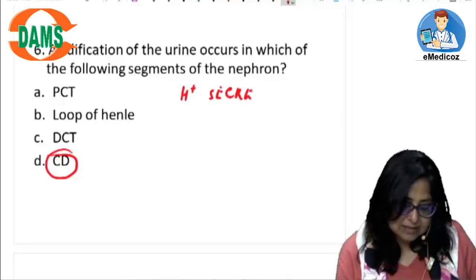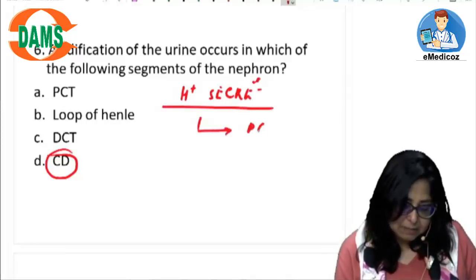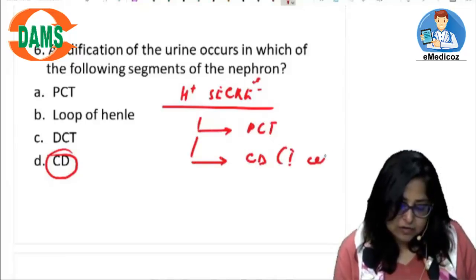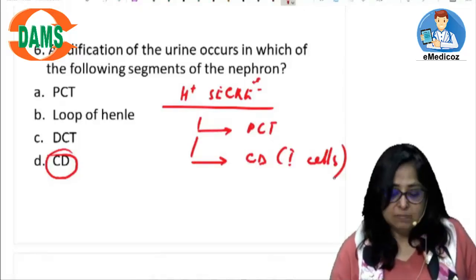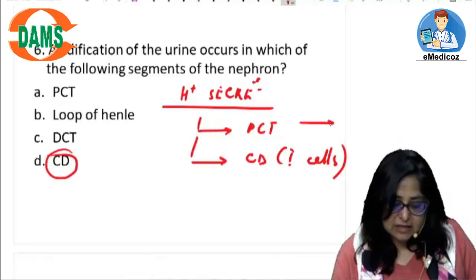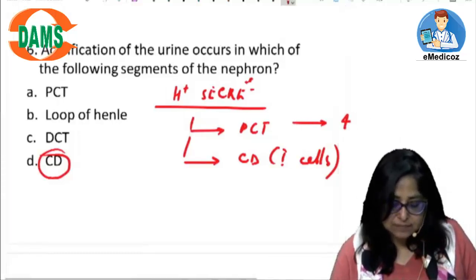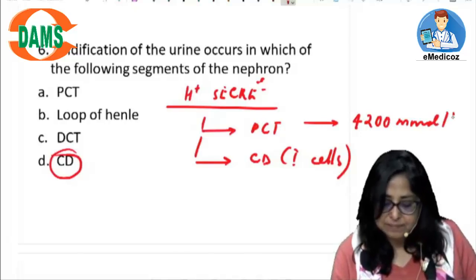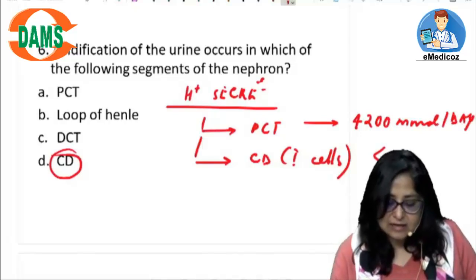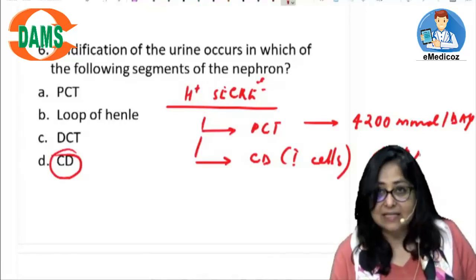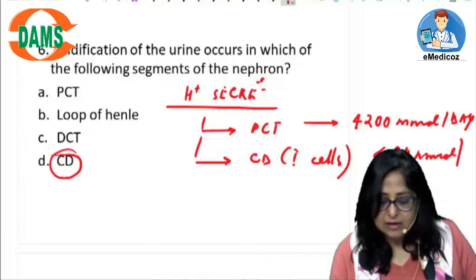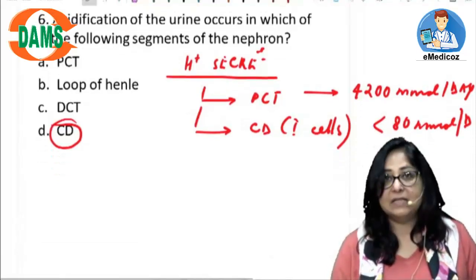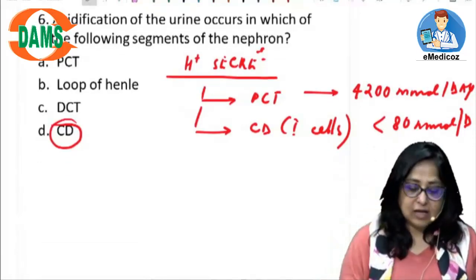H+ secretion occurs in two places: number one, the PCT, as well as in the collecting duct — specifically the intercalated cells of the collecting duct. In the PCT, almost 4200 millimoles of H+ is secreted per day. In the collecting duct, less than 80 millimoles of H+ is secreted per day.